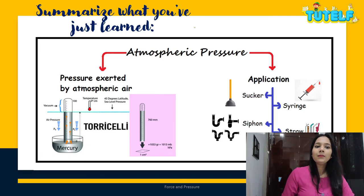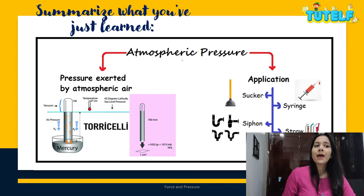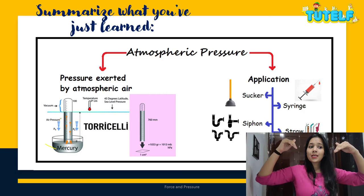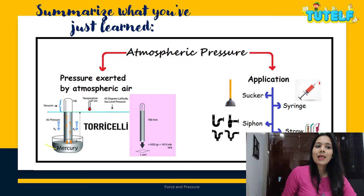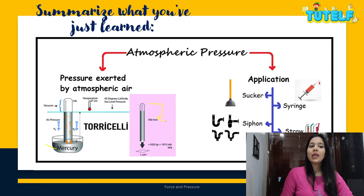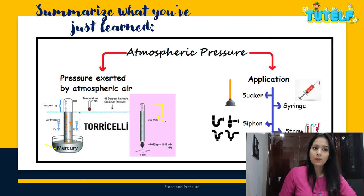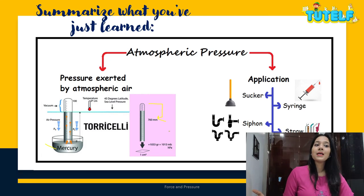Let's quickly summarize. Atmospheric pressure is the pressure exerted by atmospheric air, measured using a barometer. As atmospheric pressure is applied to mercury in a beaker, the mercury rises. This level is 760 mm, so we say the mercury rises up to 760 mm. The atmospheric pressure is 101.3 kilopascal — pascal is the unit of pressure.